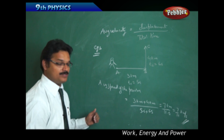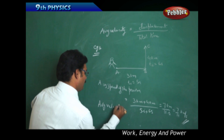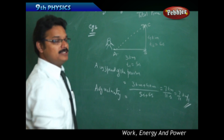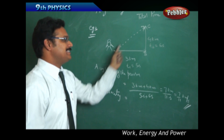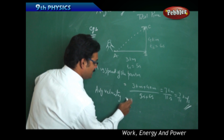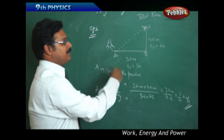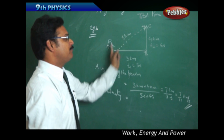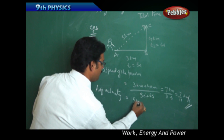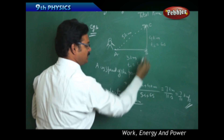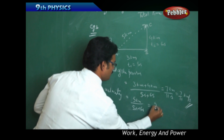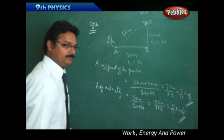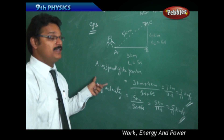Now for the turning path, average velocity of the person: displacement is the shortest distance from starting point A to ending point C. From the previous topic, using the Pythagorean theorem, displacement AC equals 5 kilometers. So average velocity equals 5 km divided by total time t1 plus t2, which is 5 plus 6 seconds, giving 5 km by 11 seconds, or 5 by 11 kilometers per second. This is how you apply the knowledge of speed and velocity in numericals.